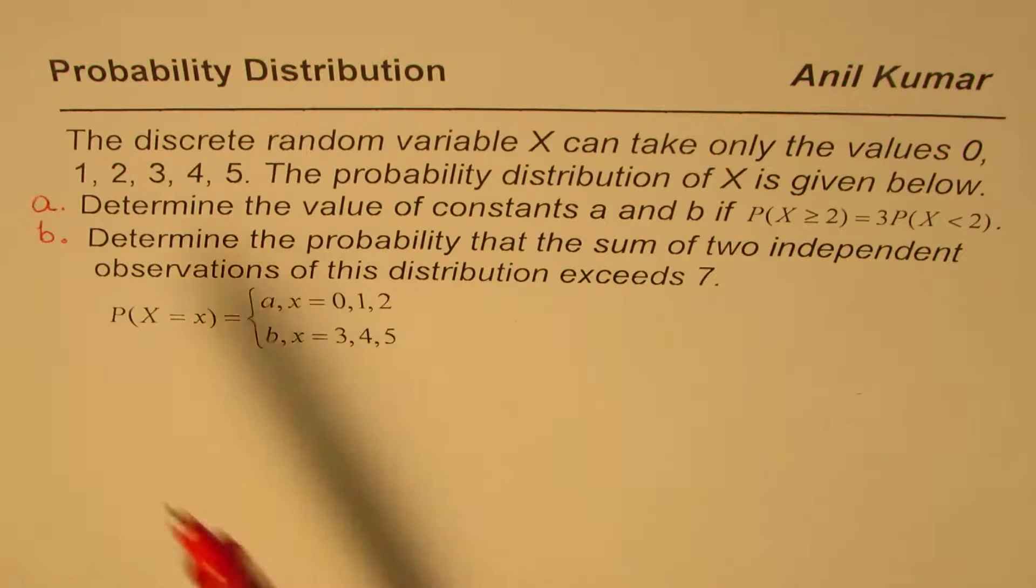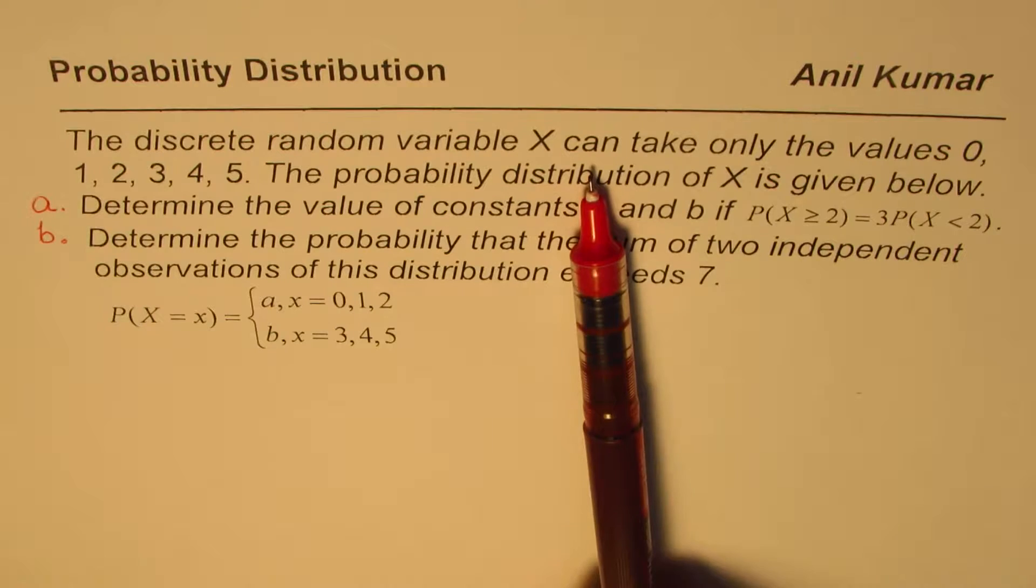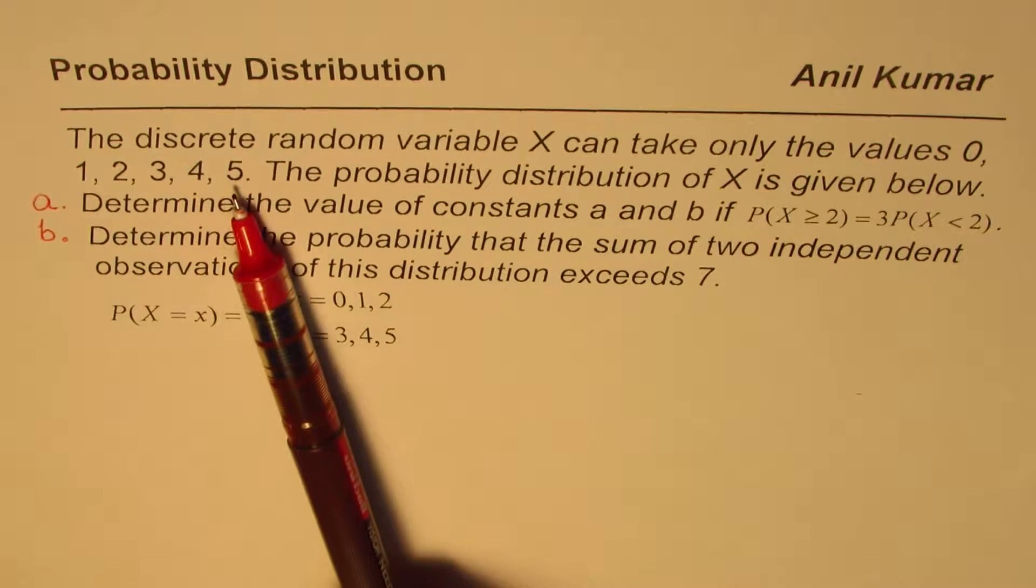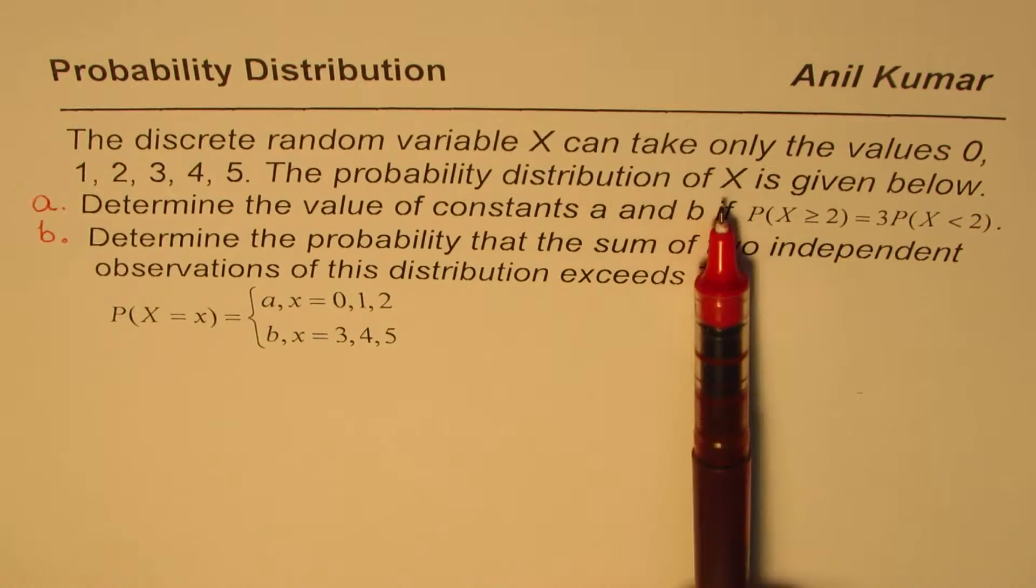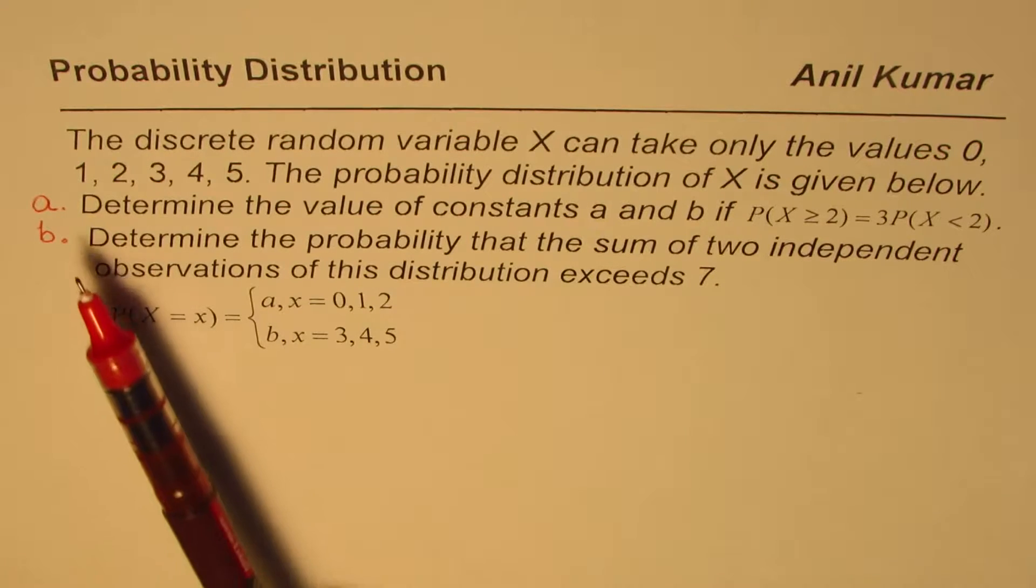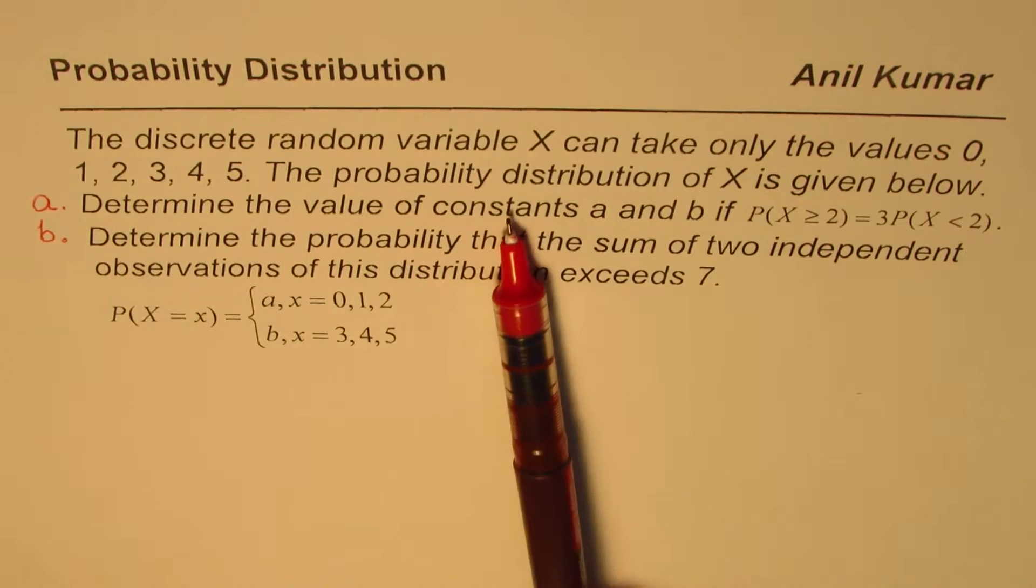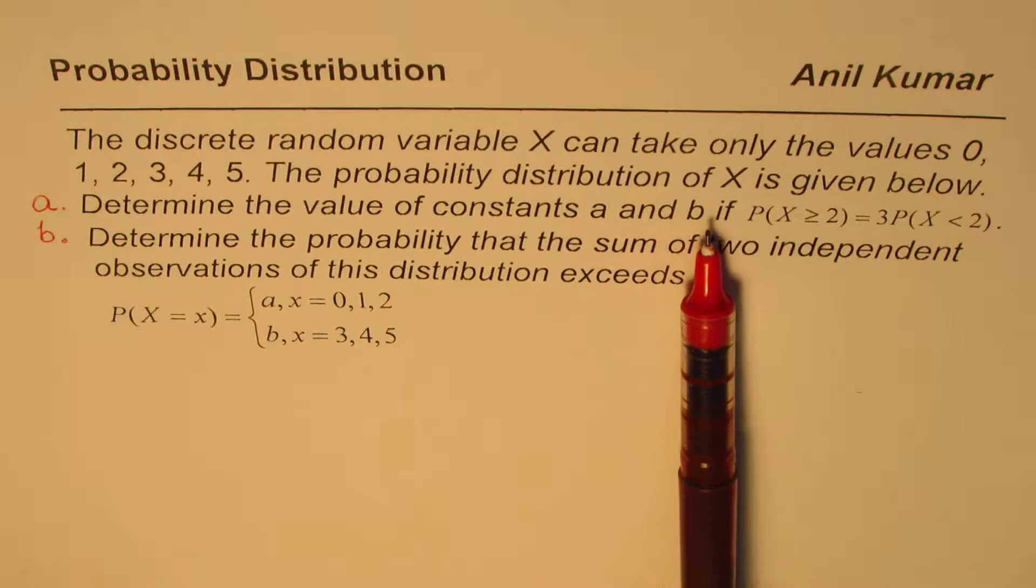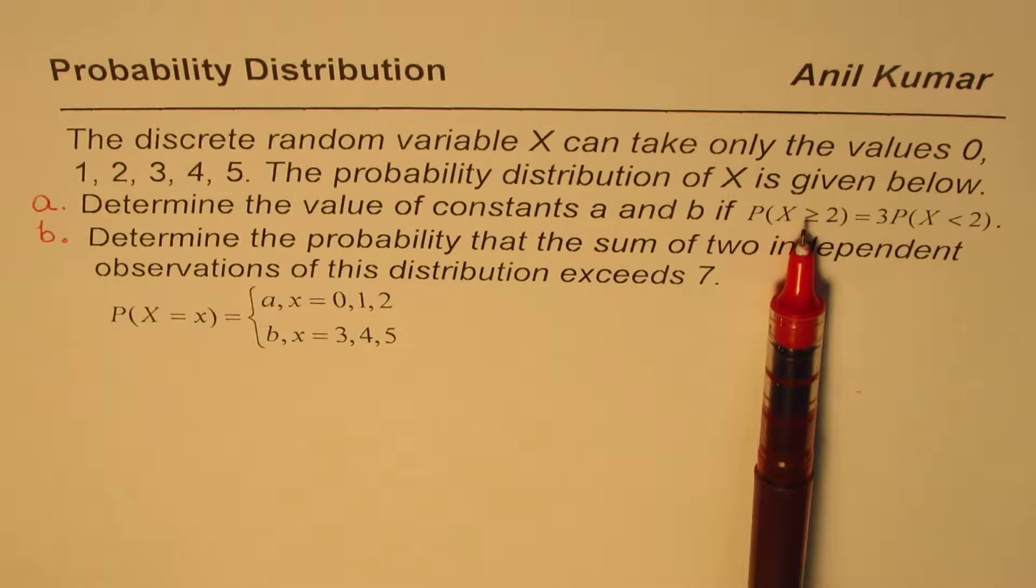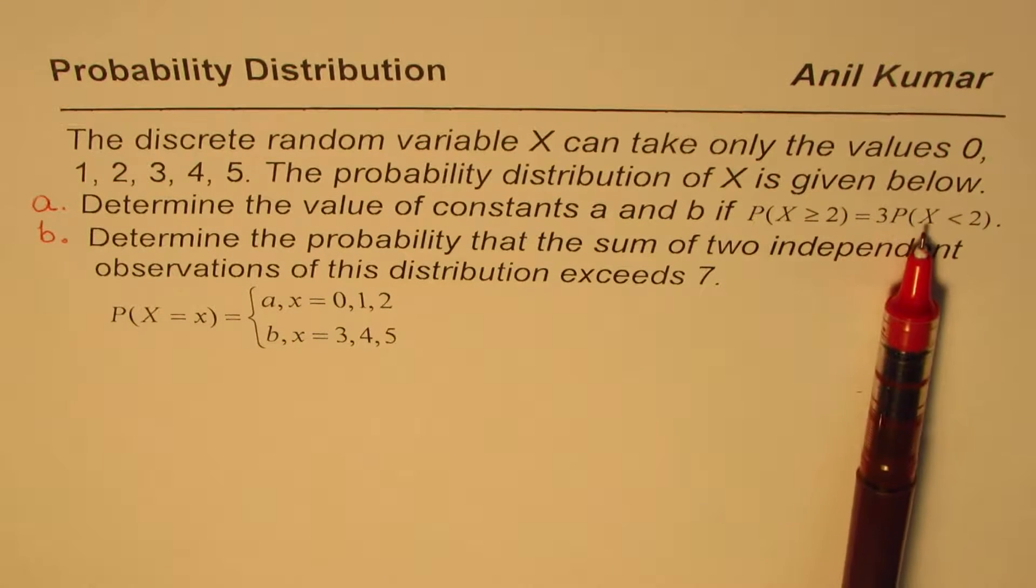The question here is: the discrete random variable x can take only the values 0, 1, 2, 3, 4, and 5. The probability distribution of x is given below. Part A of this question is, determine the value of constants a and b if probability for x to be greater than or equal to 2 is equal to 3 times probability for x less than 2.